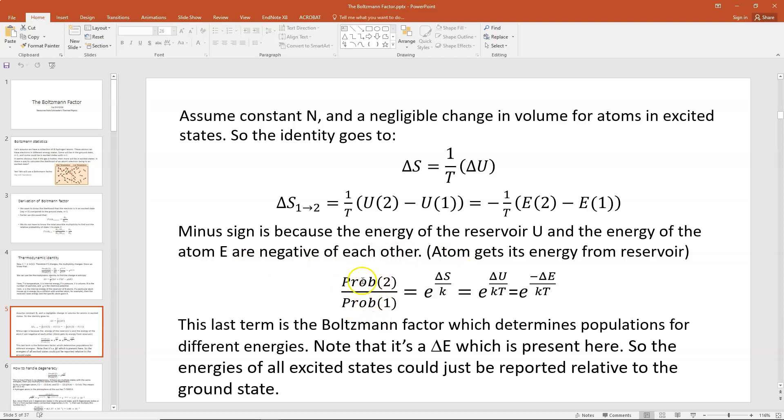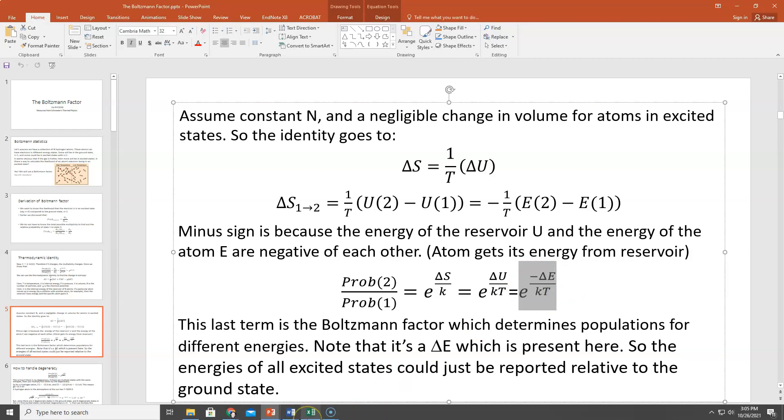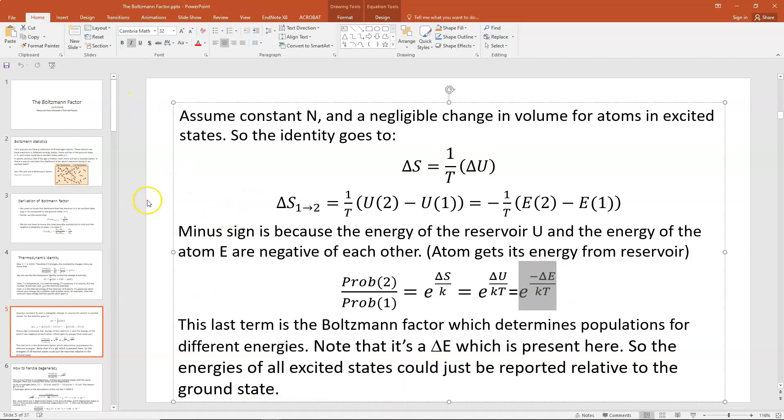So that means the relative ratio of the probabilities, probability 2 over probability 1, would be e to the delta S over k power. Plugging in for that, using our thermodynamic identity, would be equal to e to the delta U over kT power. And then, since delta U is minus delta E, e to the negative delta E over kT power. Now, this last term right here, that's a Boltzmann factor. And that determines the population for different energies. Note that it's that delta E that's present. So the energies of the excited state could just be reported relative to the ground state, and that would be how we would solve the relative probabilities.